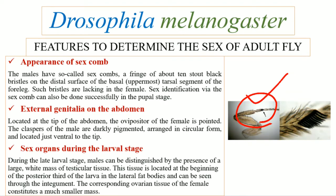Next is external genitalia on the abdomen. The female ovipositor is pointed and it is located at the tip of the abdomen, whereas the claspers of males are darkly pigmented and are located at the ventral side of the tip of the abdomen, and these are arranged in a circular form.